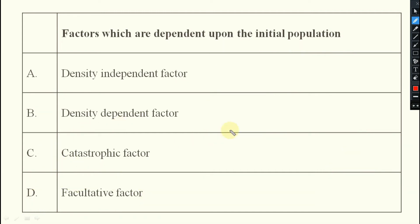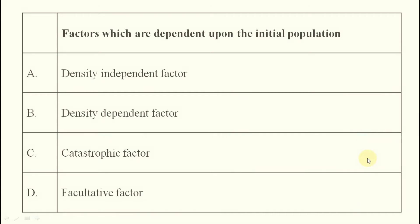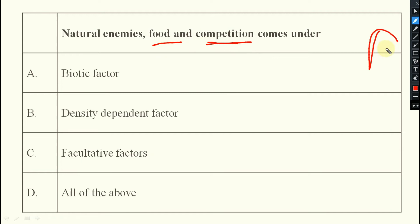How to remember these things: one is biotic, one is abiotic. In biotic, the example is food; in abiotic, the example is climate. F for facultative, C for catastrophic — try to remember it like that.